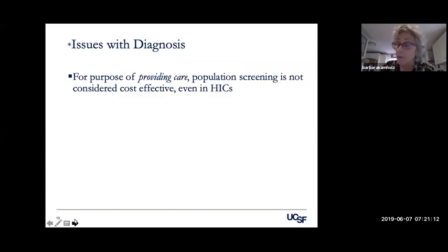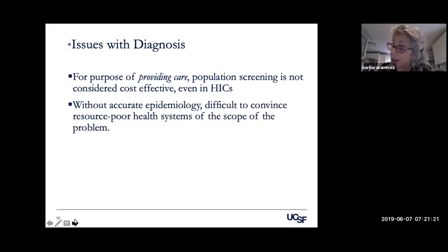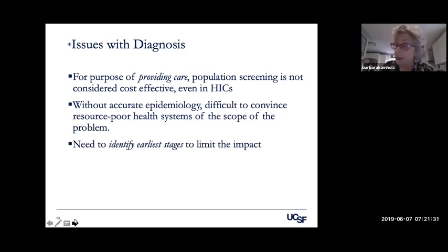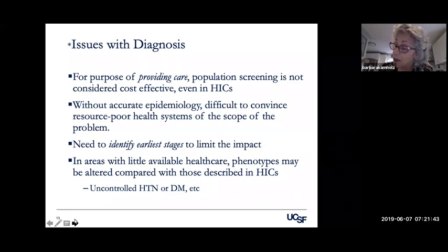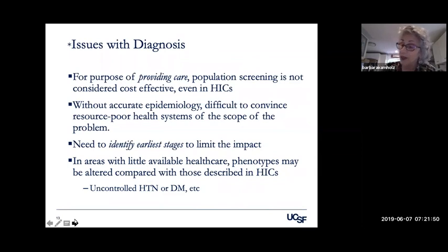Regarding issues with diagnosis: screening is not considered as cost effective as putting resources toward those with obvious early signs. Without epidemiological evidence, it's difficult to convince anyone about the scope of the problem. Intervention in the earliest stages is important, but major disorders may appear in somewhat different ways in places that have few healthcare resources. It may be most effective to assess for cognitive impairment in specific populations such as those with already identified significant vascular diseases like diabetes and hypertension.